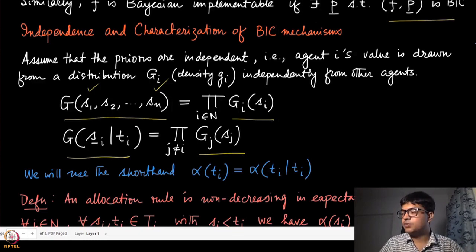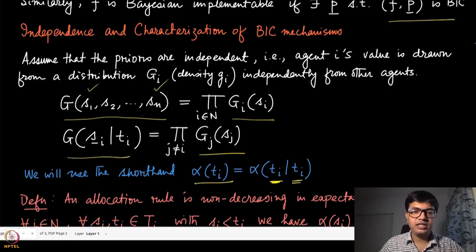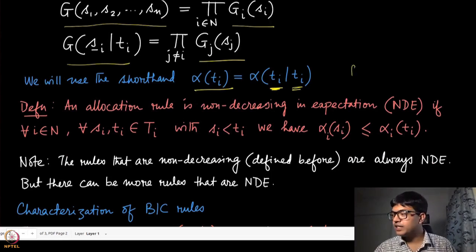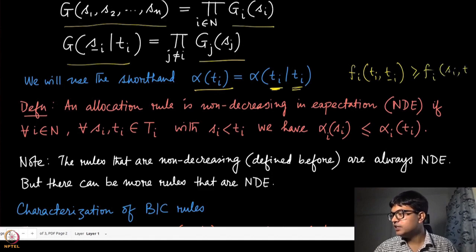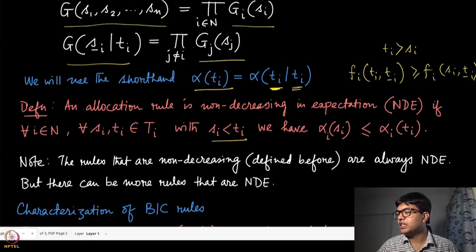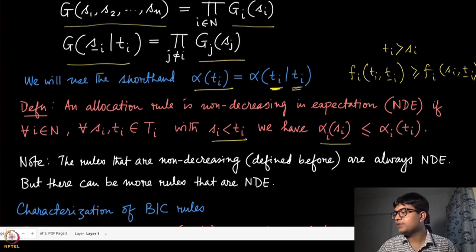The joint distribution of all types of the agents is decomposable in product form — essentially saying that all types are generated independently of each other. For simplicity, when agent i reports its true type, α(t_i) is shorthand for that notation. An allocation rule is non-decreasing in expectation (NDE): for every s_i strictly less than t_i, the expected allocation α_i(t_i) is at least α_i(s_i). This is a straightforward definition.